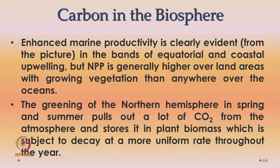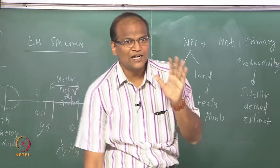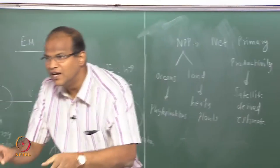Generally, the net primary productivity is more over land rather than over the oceans. The greening of the northern hemisphere in spring and summer after the rains pulls out a lot of CO₂ because photosynthesis takes place. This carbon is stored in plant biomass which is subjected to decay at a more uniform rate. If you measure the satellite-derived estimate of NPP during spring and summer vs. autumn and winter, there will be a difference.